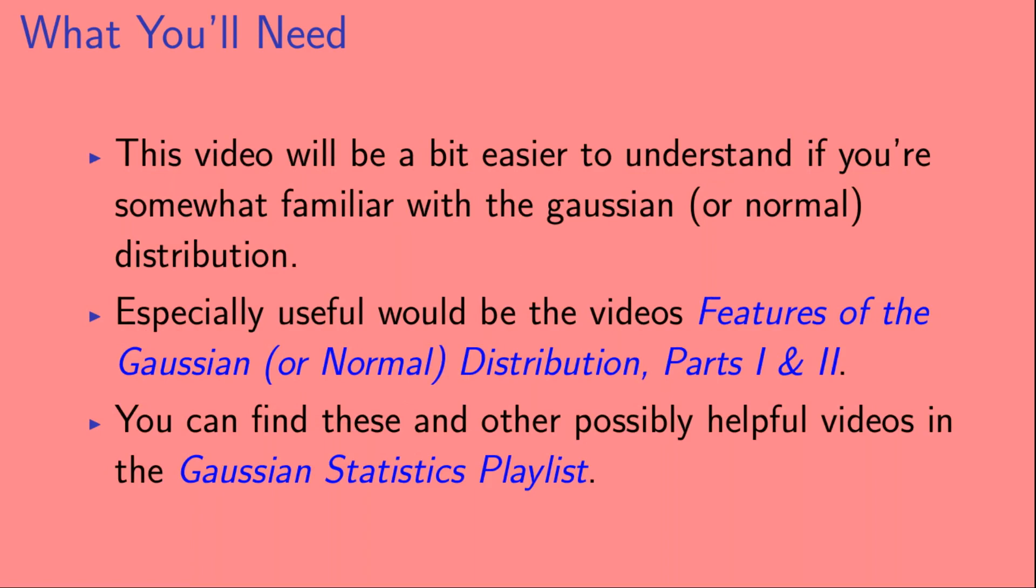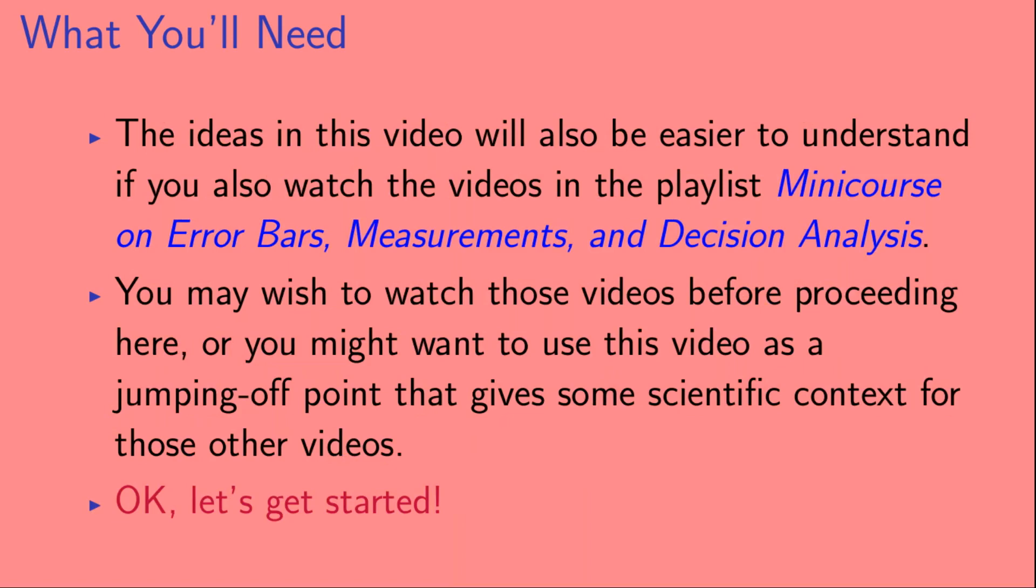This video will be a bit easier to understand if you're somewhat familiar with the Gaussian or Normal distribution. Especially useful would be the videos Features of the Gaussian or Normal distribution, Parts 1 and 2. You can find these and other possibly helpful videos in the Gaussian Statistics playlist. The ideas in this video will also be easier to understand if you also watch the videos in the playlist Mini Course on Error Bars, Measurements, and Decision Analysis. You may wish to watch those videos before proceeding here, or you might want to use this video as a jumping off point that gives some scientific context for those other videos. Okay, let's get started.